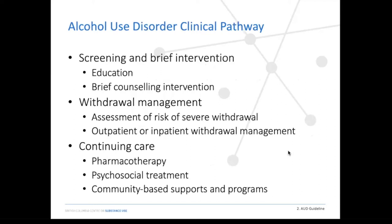This is a quick review of the alcohol use disorder clinical pathway, which has been discussed in previous ECHO sessions. Each of the steps in the clinical pathway can be viewed through a harm reduction lens. Withdrawal management can be viewed as a harm reduction strategy — even in individuals who consume high amounts of alcohol, it can be used as a break from alcohol consumption, giving their liver a break from metabolizing high amounts of alcohol. Pharmacotherapy options can mitigate alcohol cravings and relapse, and psychosocial and community-based supports can help reduce alcohol-related harms.